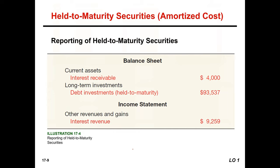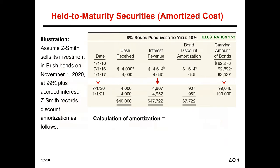Thinking about how these things would be reported on the financial statements as of December 31: we would have interest receivable of $4,000, our debt investments on the balance sheet would be up to $93,537, and on the income statement under other revenues and gains, we would have interest revenue for the year of $9,259. Not too bad.